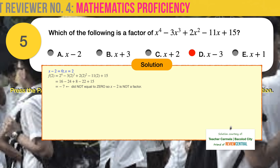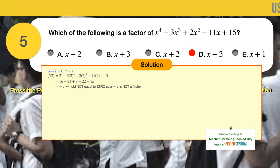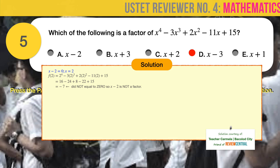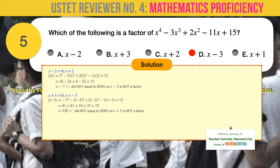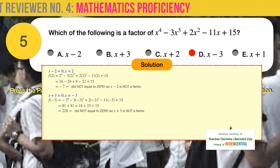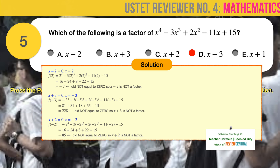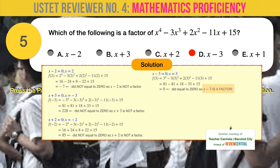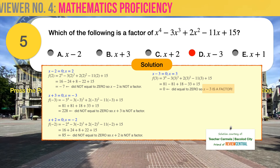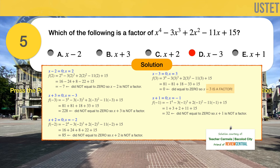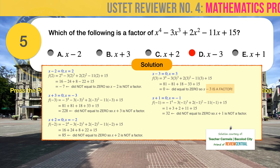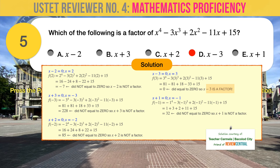For answer choice A, x minus 2 (x = 2): substituting gives minus 7, not 0 — not a factor. For B, x plus 3 (x = -3): result is 228, not 0 — not a factor. For C, x plus 2 (x = -2): result is 85, not 0 — not a factor. For D, x minus 3 (x = 3): result is 0 — x minus 3 is a factor. For E, x plus 1 (x = -1): result is 32, not 0 — not a factor. Only D, x minus 3, is a factor.